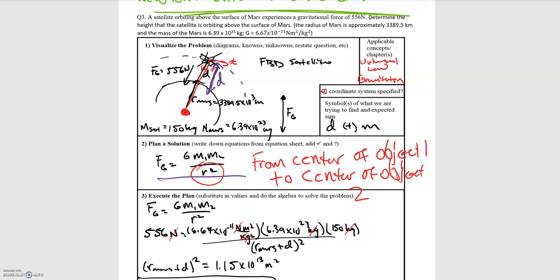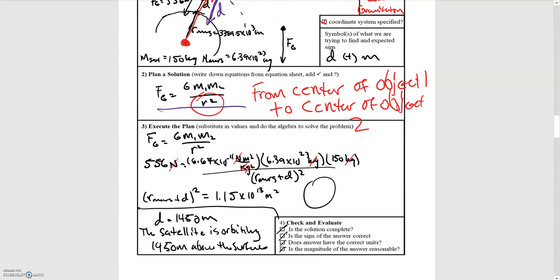Picking up from the last video, this R in the gravitational equation is always going to be from the center of a planet, or any large object. Say you have a problem with two balls — you might be given the distance from one surface, the gap between them, and the other surface. It's always going to be from the center of your objects, not from the surface.